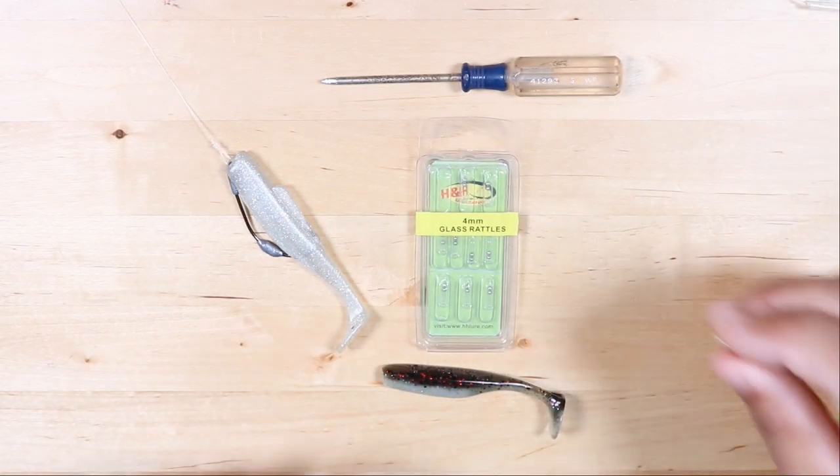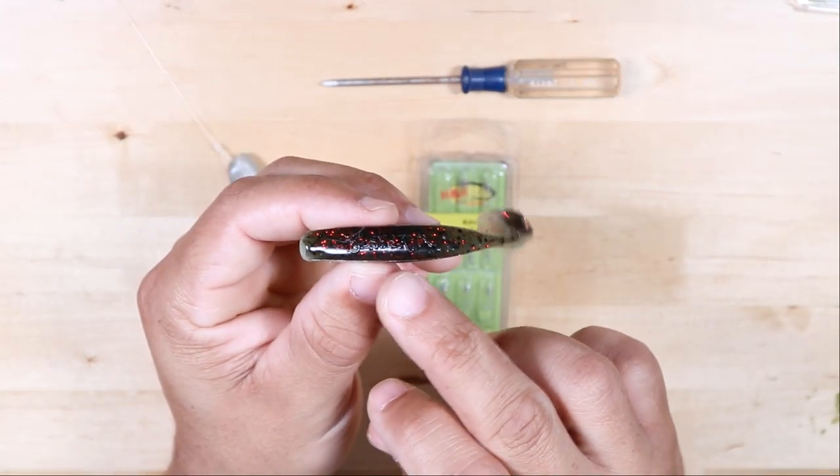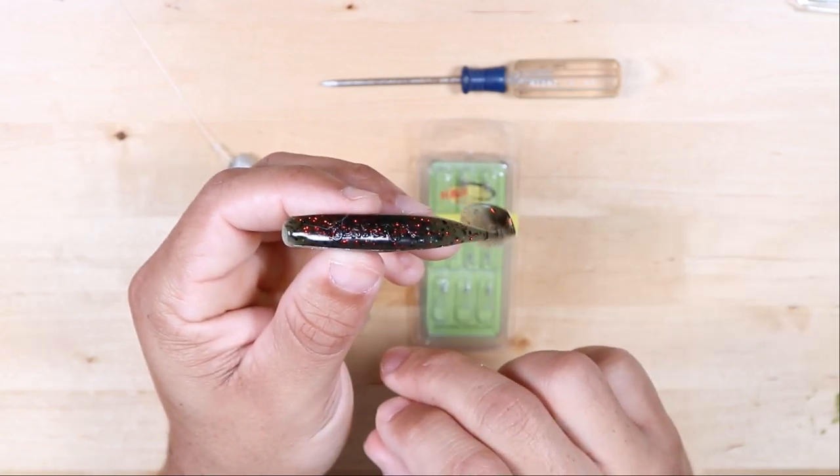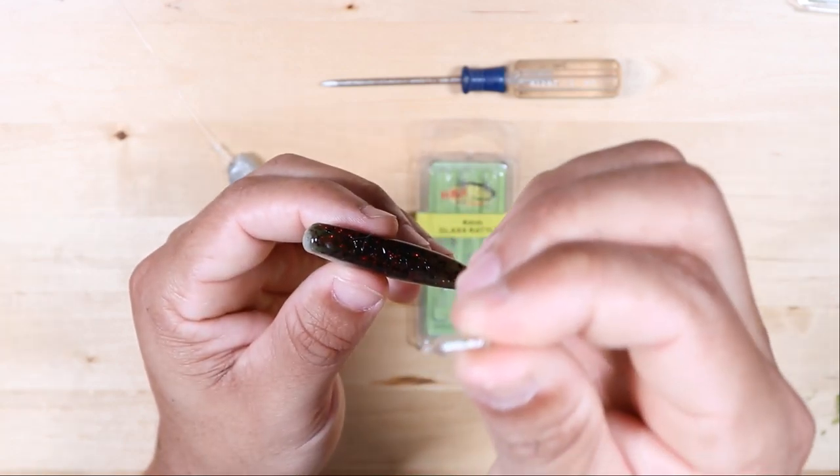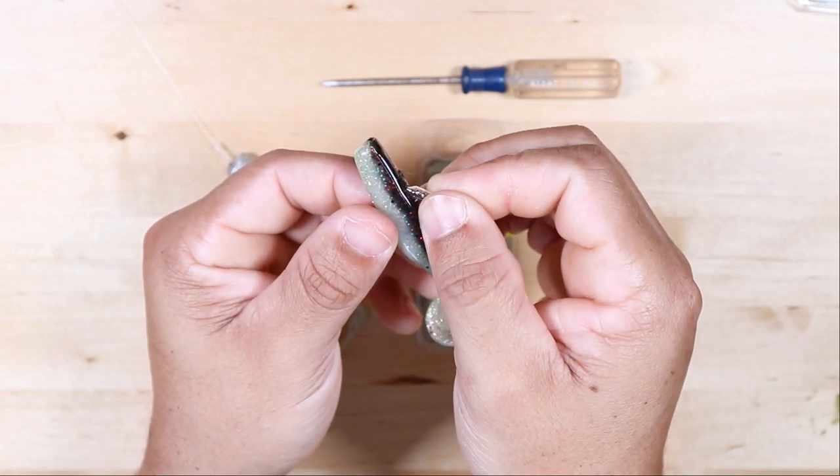Same thing for swim bait or paddle tail style lures. With these, I like to go through the top of the body near the middle where that gap would be where the hook would go, and pretty close to the head. Again, take that pointed end of the rattle.